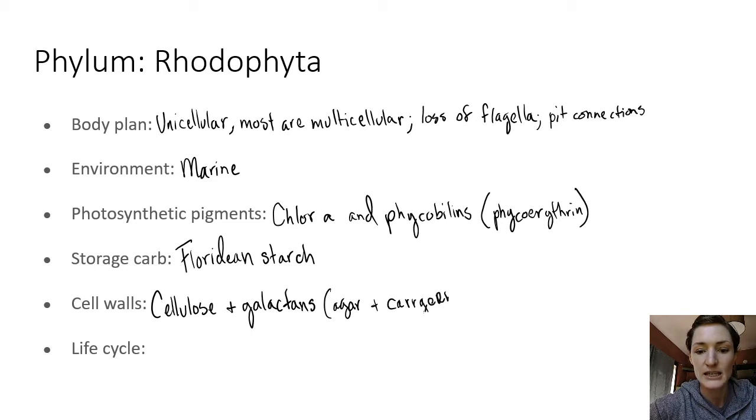And the ones that we are interested in for red algae is agar and carrageenan. Agar we're using in petri plates and also as a food additive. And carrageenan we use as an emulsifying stabilizer to help things that wouldn't normally dissolve together to stay together.